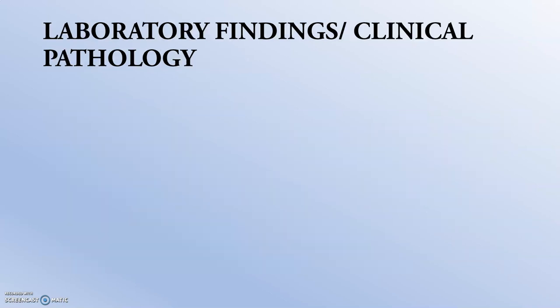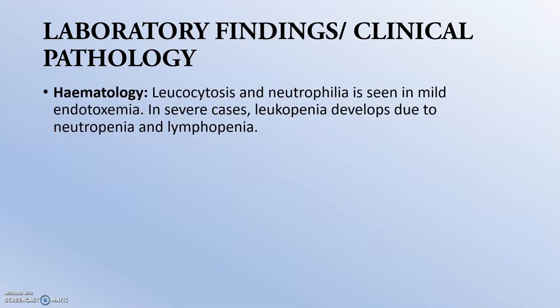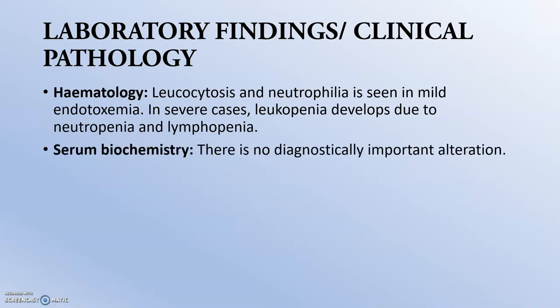Moving to laboratory findings and clinical pathology — first, we check the blood cells and their count. When leukocytes and neutrophils are very high, we can conclude that endotoxemia is present. In severe cases, leukopenia develops due to neutropenia and lymphopenia — leukocytes decrease because cells are attacked by the toxins, and the body attacks neutrophils that have captured the toxins. Regarding serum biochemistry, there is no diagnostically important alteration.